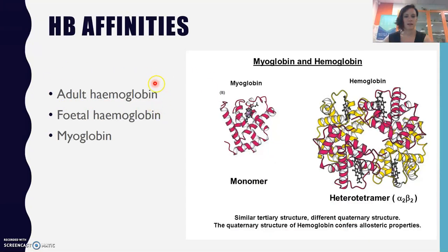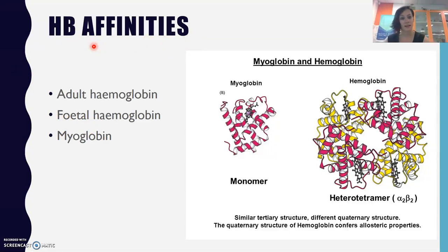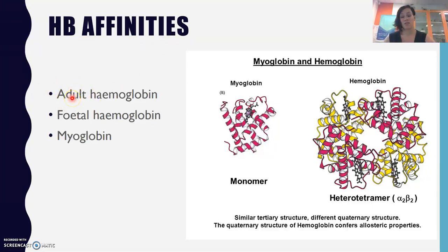Hemoglobin is really important. Adult hemoglobin is what you have as you grow older — even babies have adult hemoglobin — but fetal hemoglobin is a different type that fetuses have in the womb. It is different because it has a different affinity, meaning how much it 'likes' something. Fetal hemoglobin will bind oxygen at a much stronger affinity than adult hemoglobin.